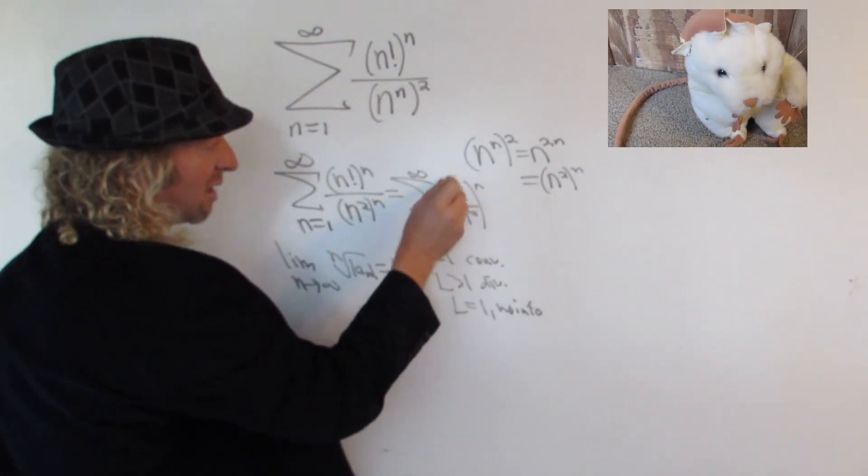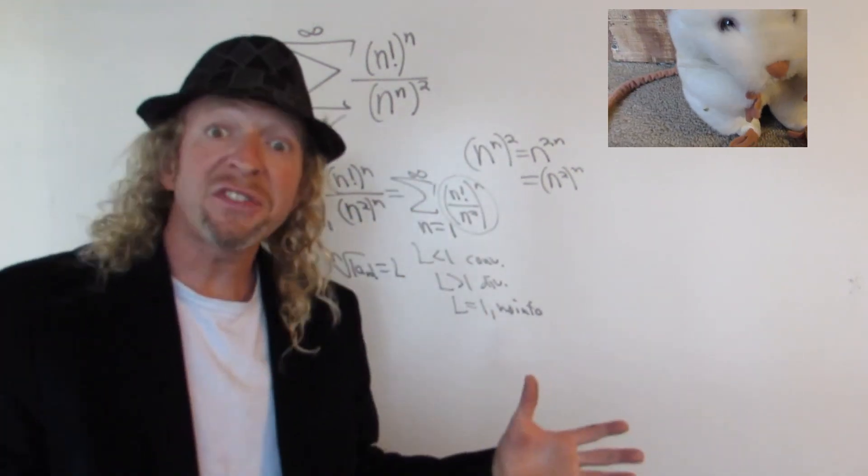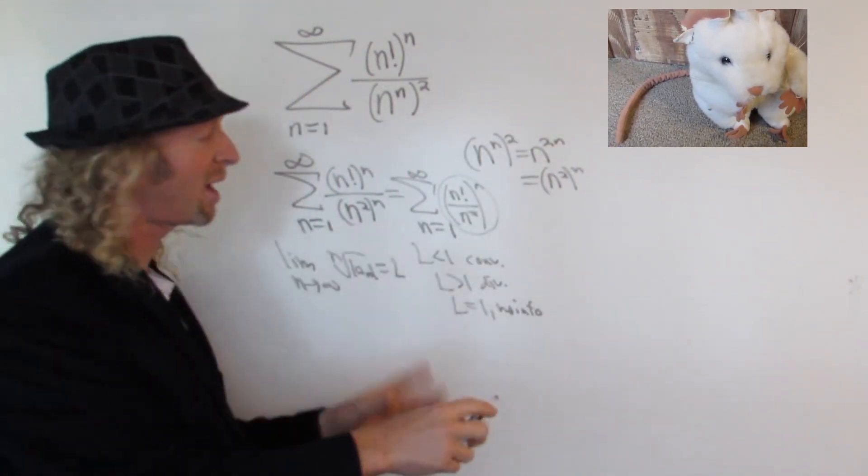So in this case, this is our a sub n. When we take the absolute value, nothing happens. Everything is already positive, right? It's all positive.